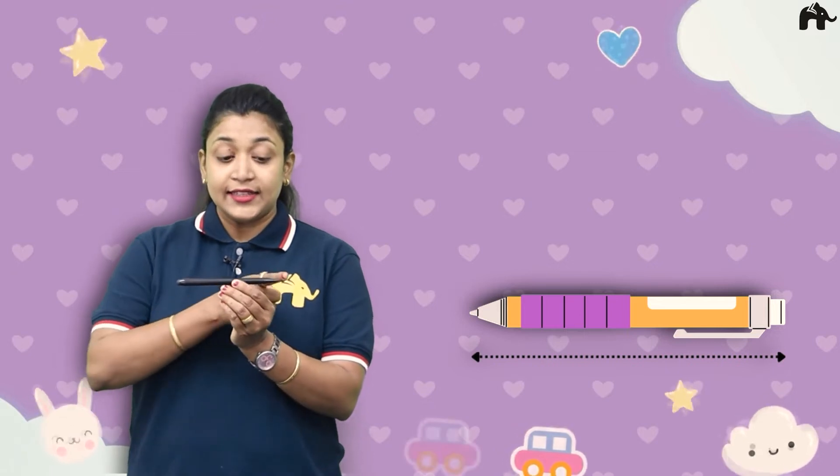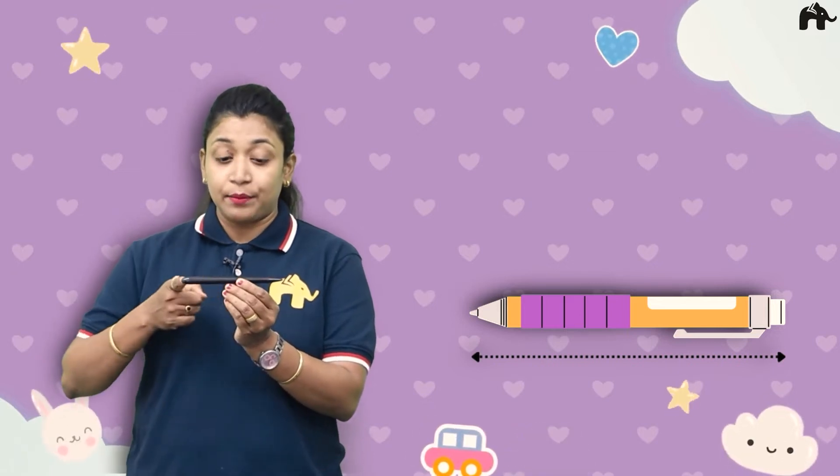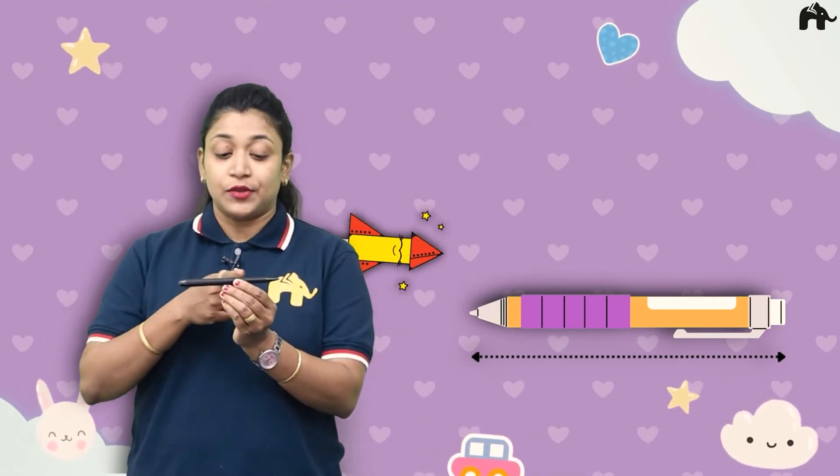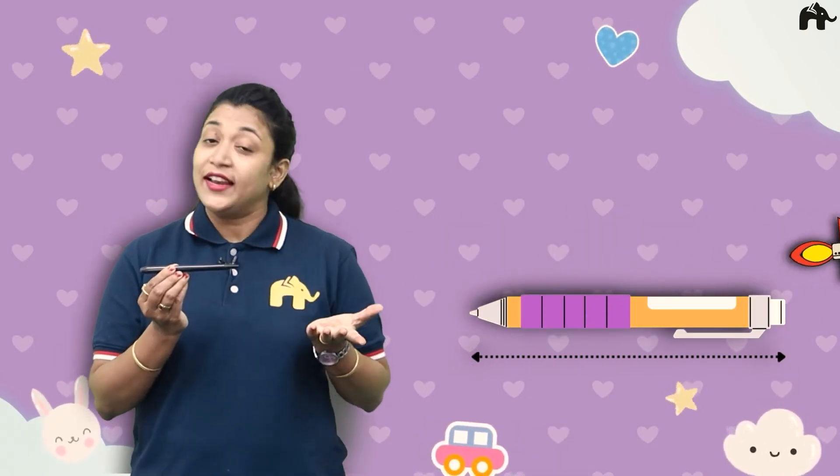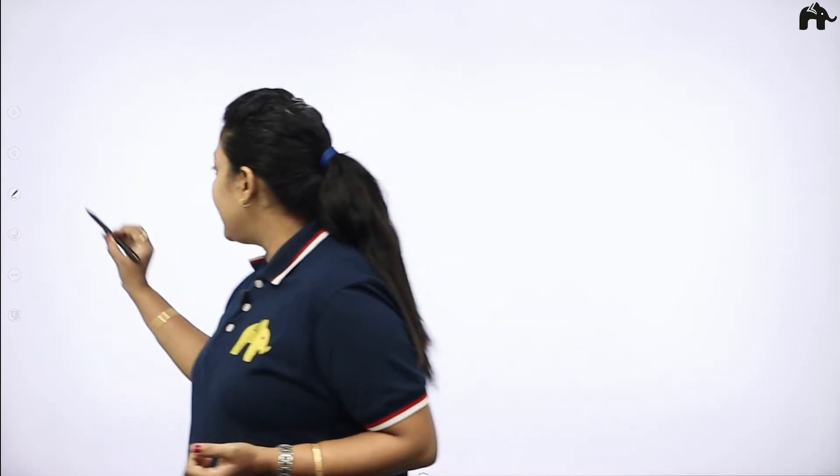Now let me tell you — what position is this pen in now? Is this standing line or sleeping line? This is sleeping line! This is the position of sleeping line. Yes, so this is sleeping line. What is this? Sleeping line! So let's try to write sleeping line.